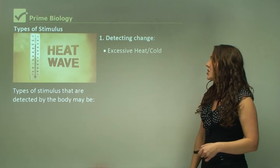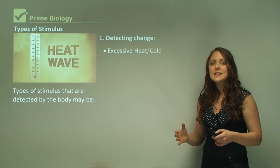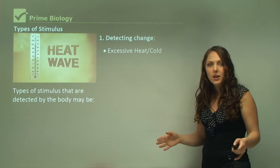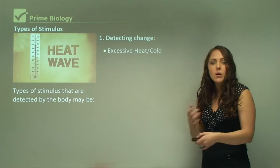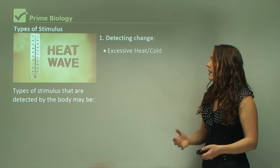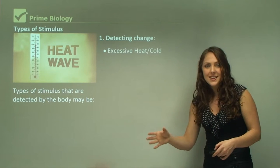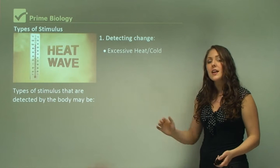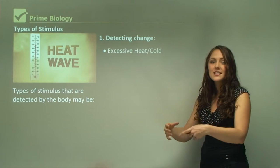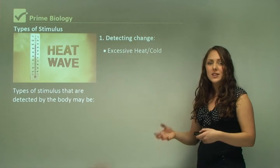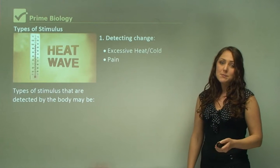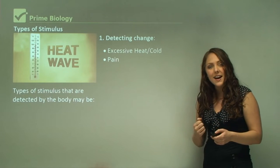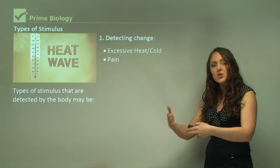We might detect excessive heat or cold — if we walk into a walk-in freezer, we can detect that change straight away. If you touch something extremely hot, your hand might jerk back as a reaction; that's the stimulus. Another example is pain — if something sharp touches our skin, we would react and might jerk backwards.